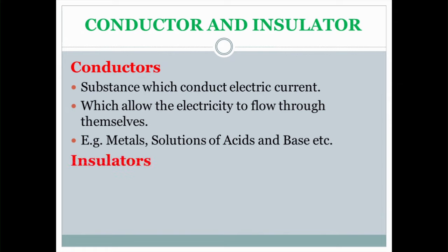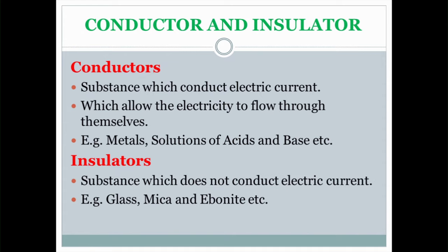Totally opposite to a conductor is the insulator. A substance which does not conduct electric current is called an insulator. Examples include glass, mica, and ebonite.